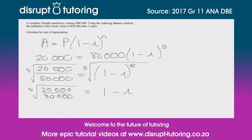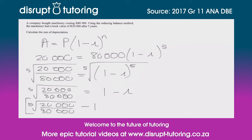The last thing we need to do is get rid of that 1 and then divide both sides by the negative. So we're going to have the fifth root of (20,000 over 80,000) minus 1, and then divide both sides by the negative, giving us i equals negative of that whole expression.